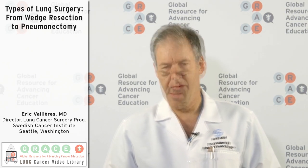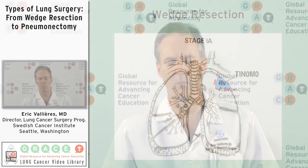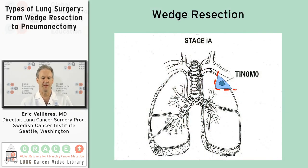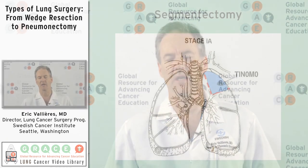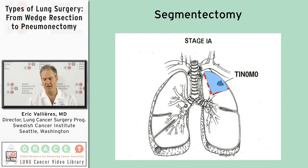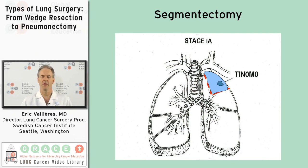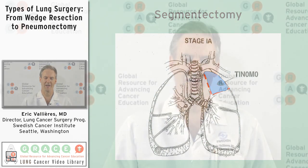In lung cancer surgery, there are different types of operations that one can perform. The smallest amount of lung that one would consider removing is called a wedge resection, which is the equivalent of taking a bite into the lung without looking at boundaries and anatomy. As you move up in the magnitude of the surgery, the next operation in line would be called a segmentectomy, which relates to the smallest anatomical division that the pulmonary lobes have.